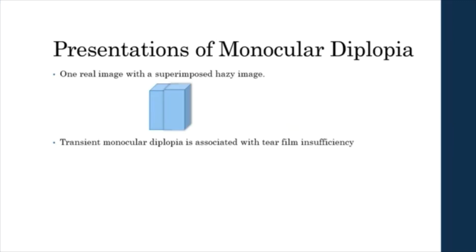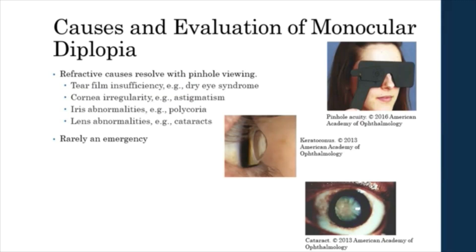We now turn our attention to monocular diplopia. Recall that monocular diplopia is double vision that resolves only when the affected eye is covered. A patient with monocular diplopia due to an ocular cause will report seeing one real image with a superimposed hazy image. Transient monocular diplopia is associated with tear film insufficiency. The first step in evaluation should be a pinhole test. If the diplopia resolves with pinhole viewing, then the cause must be refractive and not neurological. Examples of refractive causes include tear film insufficiency, corneal irregularity such as astigmatism, abnormalities of the iris such as polycoria, and lens abnormalities such as cataracts.